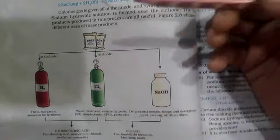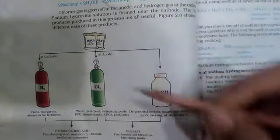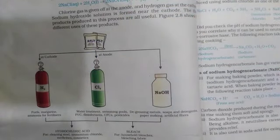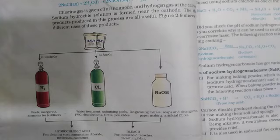If we talk about chlorine — what are the uses of chlorine? Chlorine is used in water treatment plants, swimming pools, making PVC, and as a disinfectant.